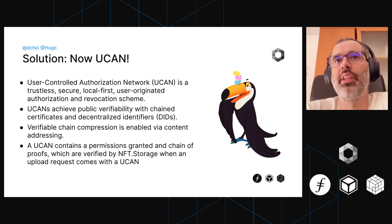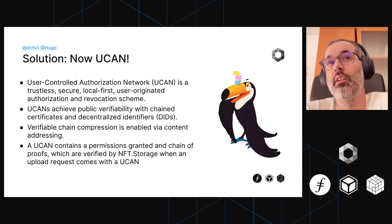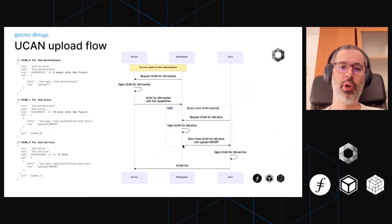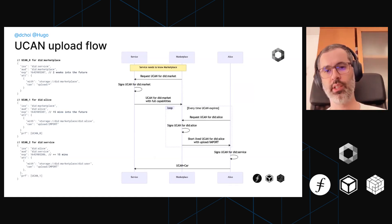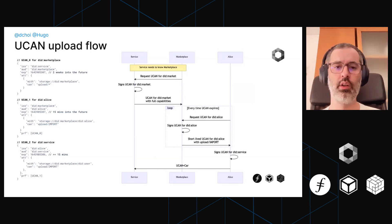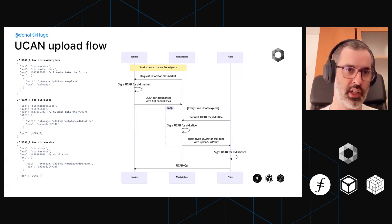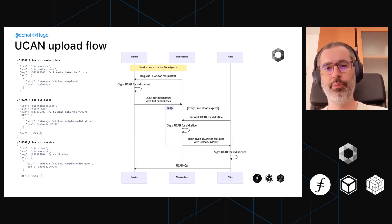Users can own that UCAN and even generate more UCANs for themselves if they have multiple devices, keeping whatever permissions the marketplace gave them. It's a bit more decentralized and users are more in control — whether they're the user of the marketplace or an end user going to a website and trying to upload a file to NFT.storage.